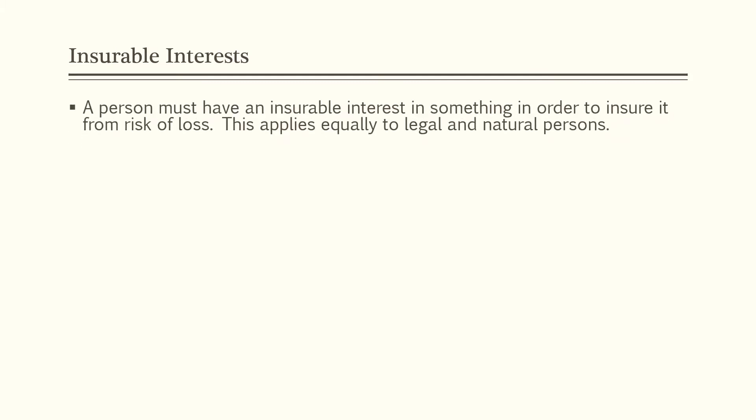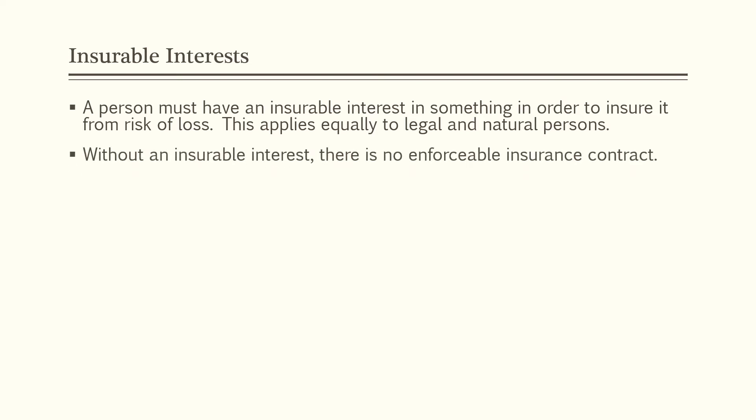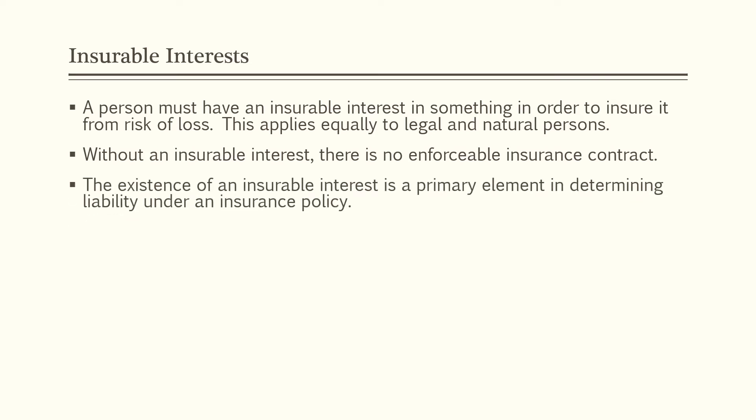Next we will discuss insurable interests. A person must have an insurable interest in something in order to insure it from risk of loss. This applies equally to legal and natural persons, meaning both an individual and a business have to have an insurable interest in something in order to insure it. Without an insurable interest, there is no enforceable insurance contract. The existence of an insurable interest is a primary element in determining liability under an insurance policy — if someone doesn't have an insurable interest and makes a claim, the insurance company doesn't have to pay.